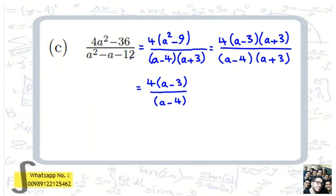The two numbers must multiply to minus 12 and sum to minus 1. Checking pairs — 6 and 2, 12 and 1, 3 and 4 — we find that minus 4 and plus 3 work: their product is minus 12 and their sum is minus 1. So the denominator factors as (a minus 4)(a plus 3). The numerator becomes 4 times (a minus 3)(a plus 3).